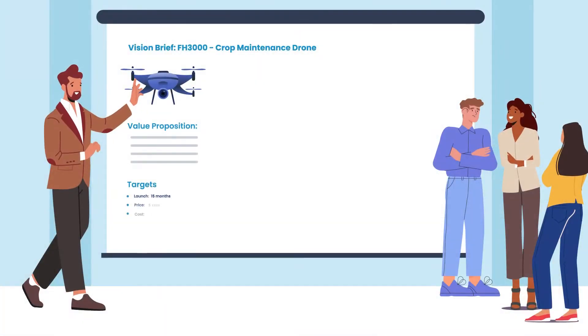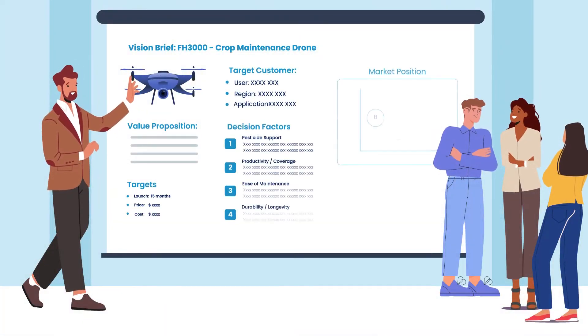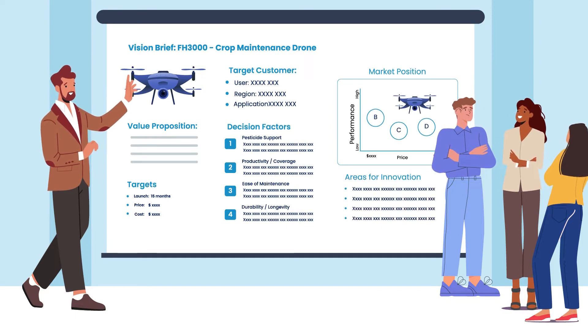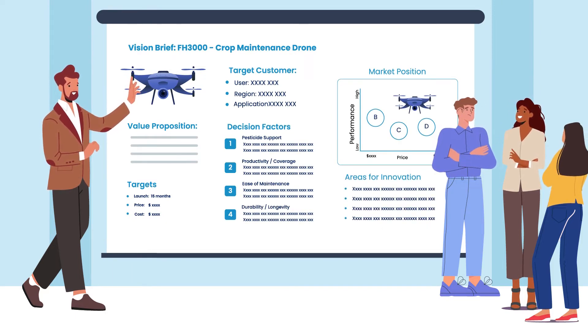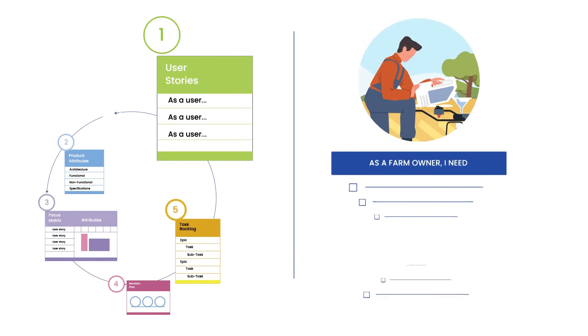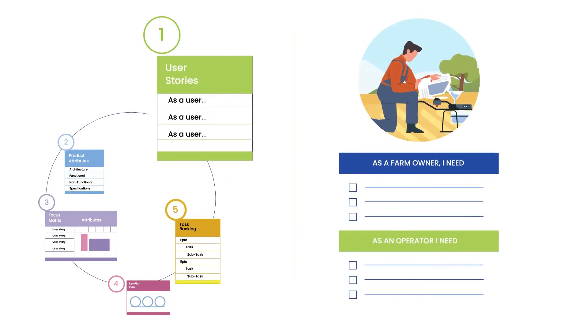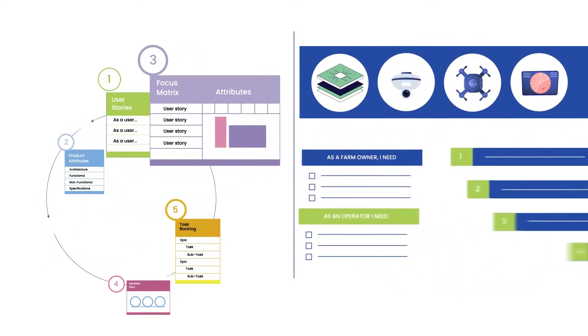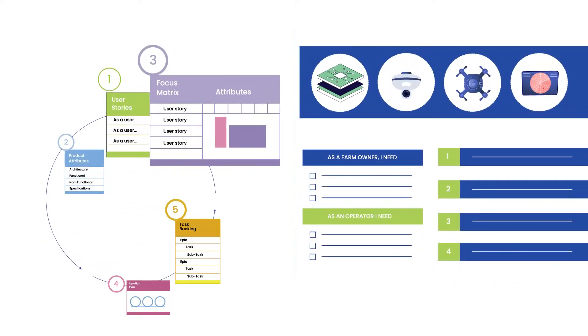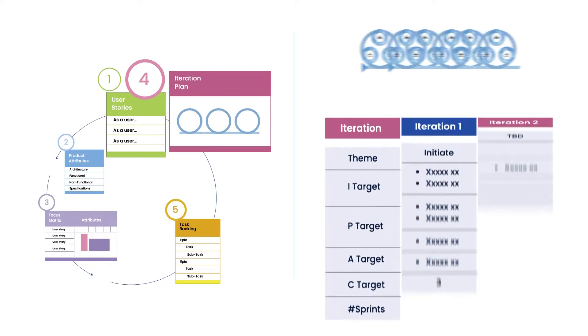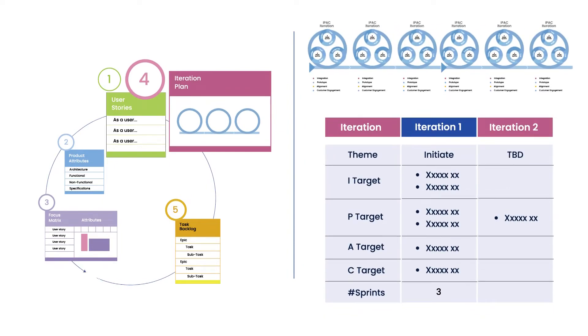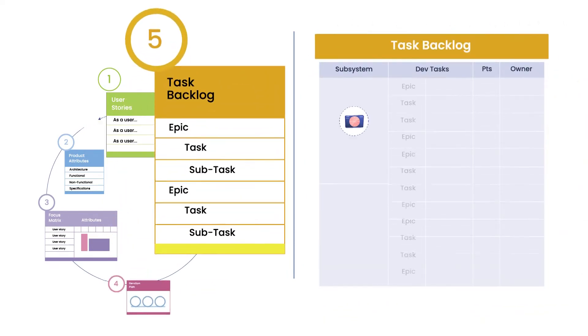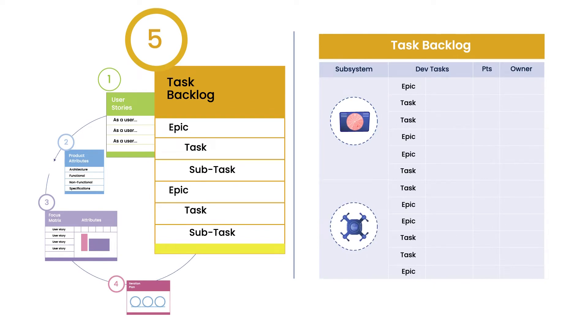Starting with an agile vision brief, the MAD on-ramp enables collaborative activities to quickly initiate a project in the right direction. In a matter of days or weeks, the team works through user stories, develops a common understanding of potential product attributes, identifies key areas of risk and innovation needs, and identifies critical early milestones with an initial iteration plan. At the end of the on-ramp, the team has the start of a focused backlog ready to execute.